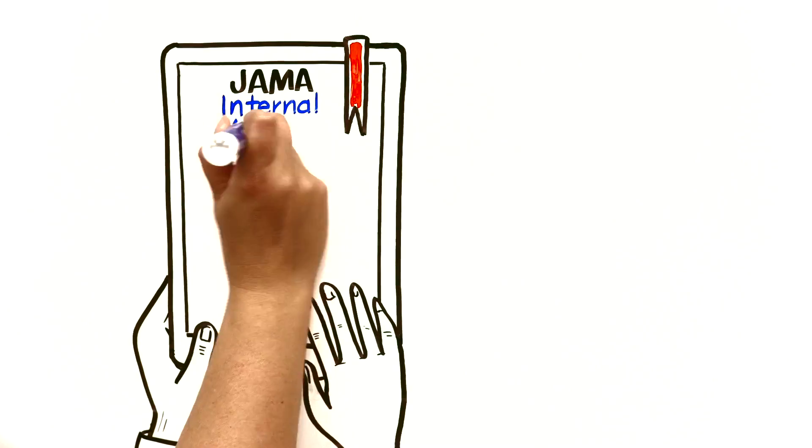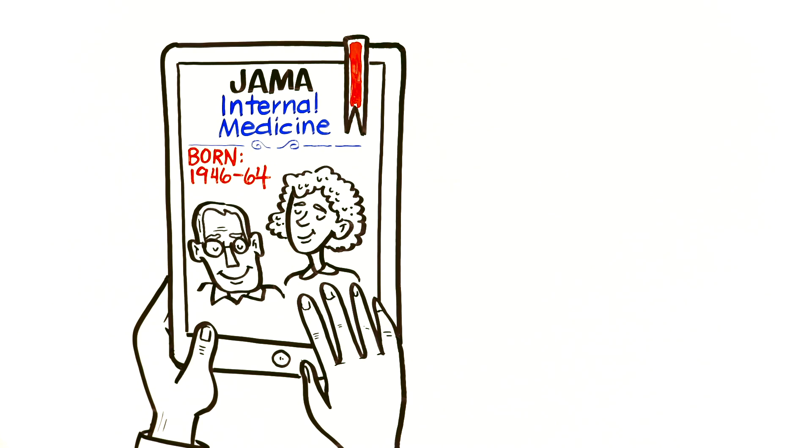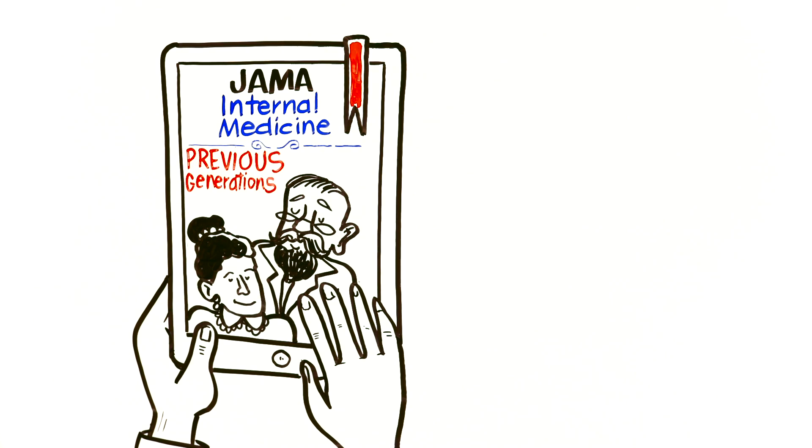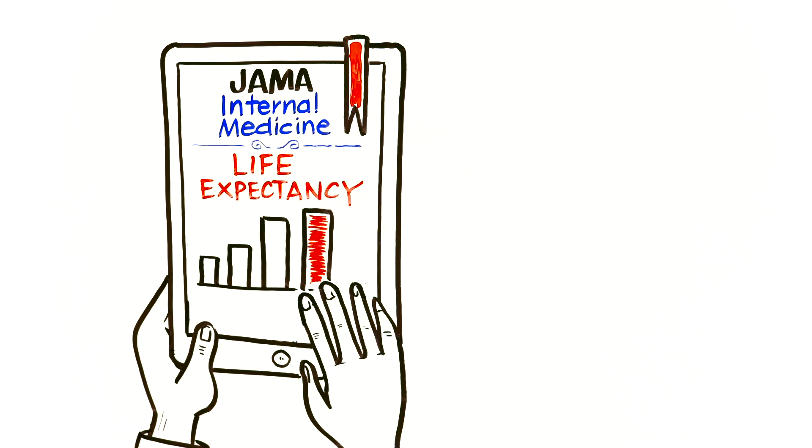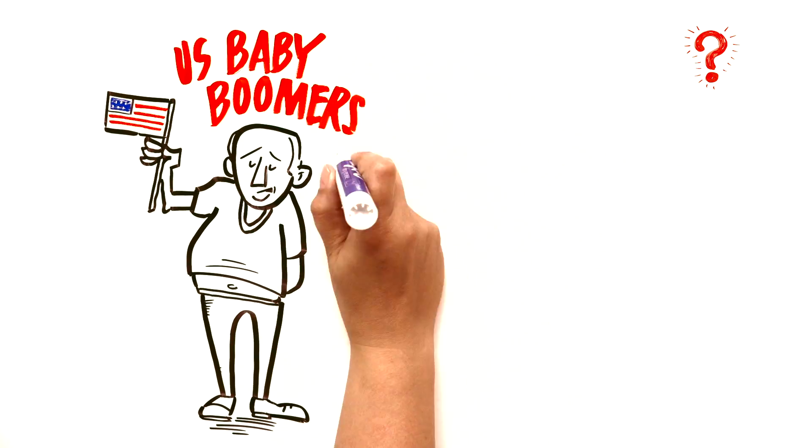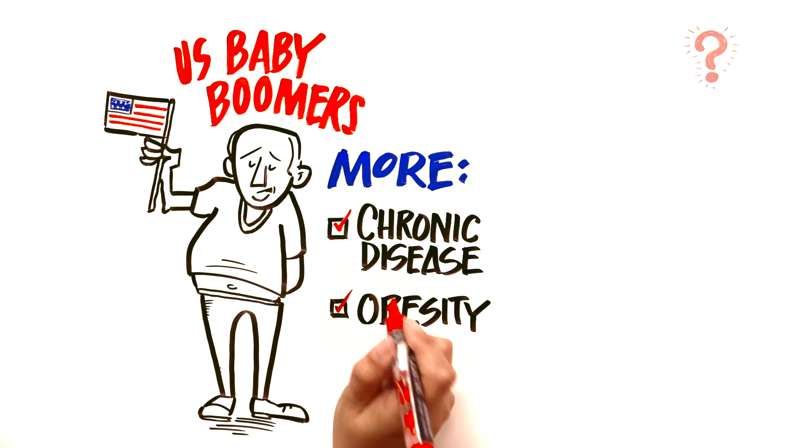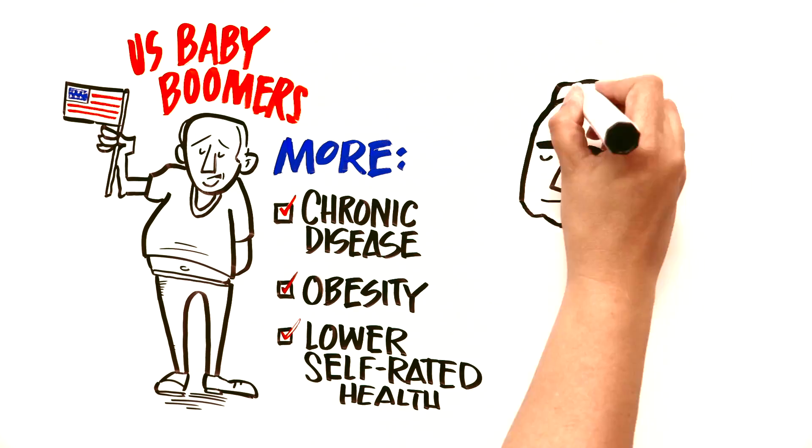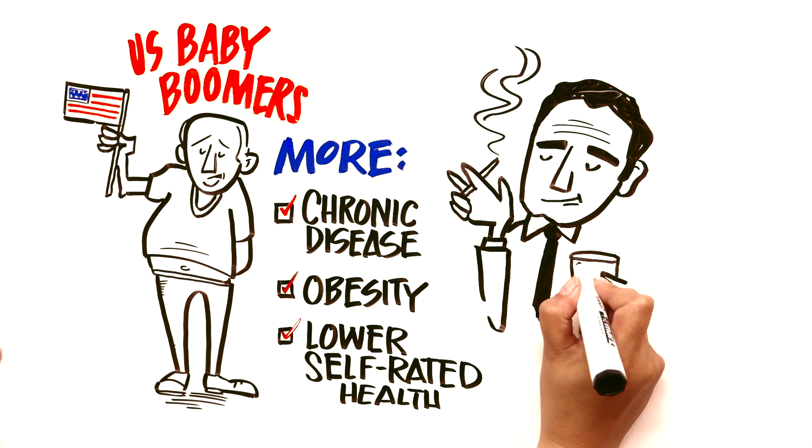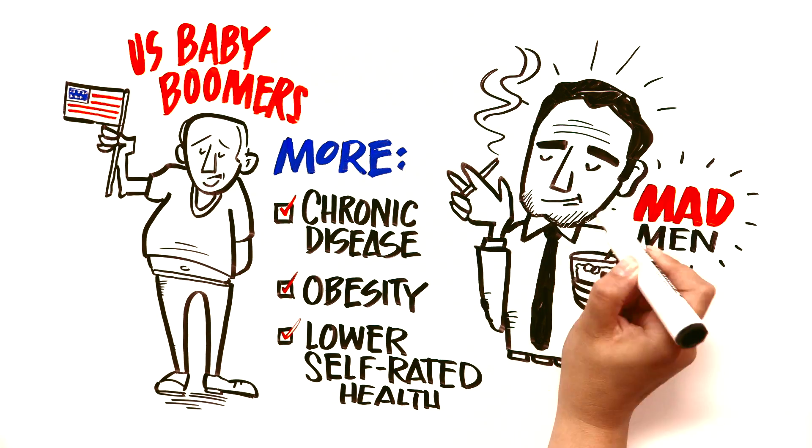A recent review in JAMA Internal Medicine compared the health of baby boomers to previous generations. It showed what you might expect - medical advances have led to longer life expectancies, but it also shows something else. U.S. baby boomers have more chronic disease, more obesity, and lower self-rated health than members of the previous generation at the same age, even though we smoke less and work out more than the madman generation. So what's the difference?